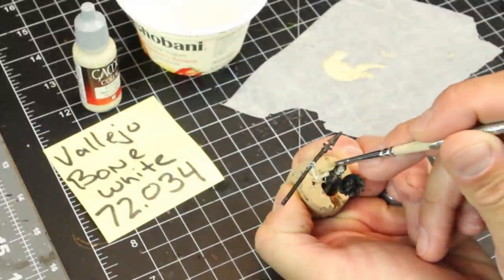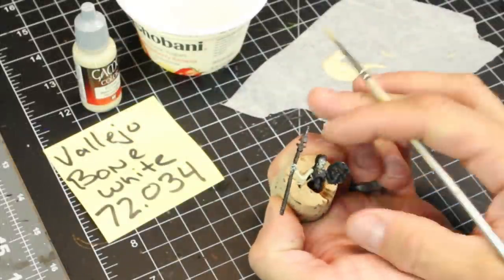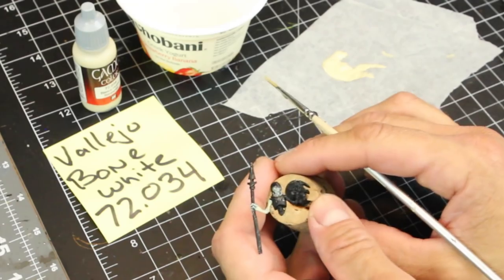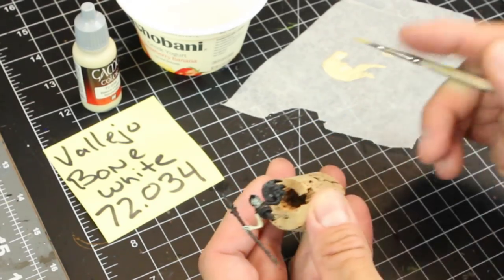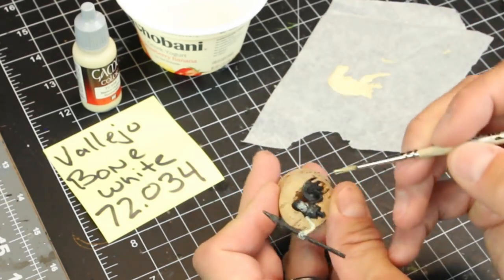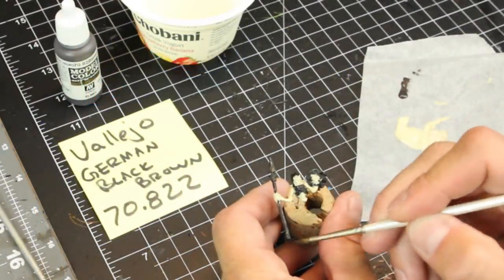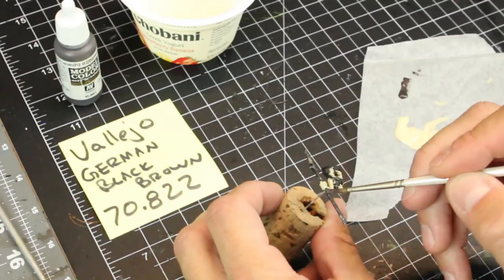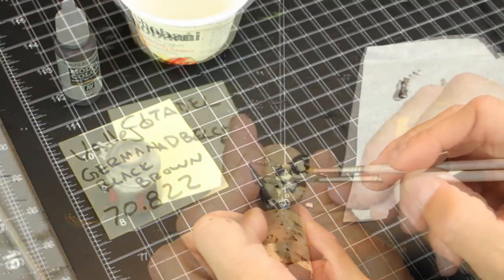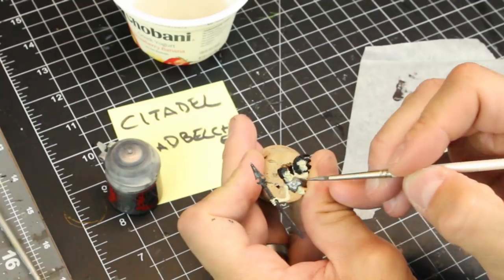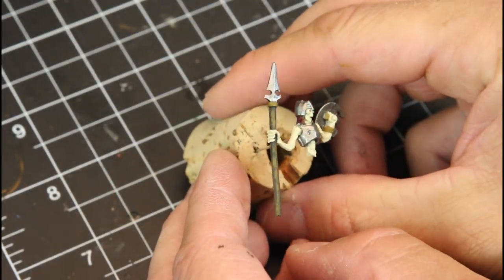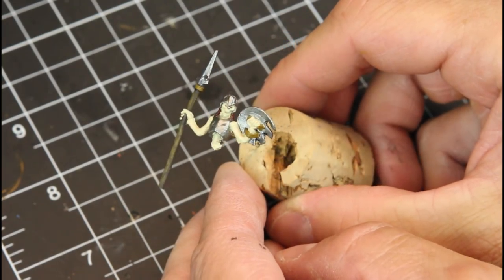Now we're going to paint up the miniature here. I've based him in some black primer by Vallejo. And we're just using a few basic colors to paint him up. Again, the main attractant to this piece is obviously the acid pool. But we want to do justice to this Reaper miniature. So we're going to use some Leadbelcher to paint up all the metal. This is what he looks like base before we do any washes or any rust effect.